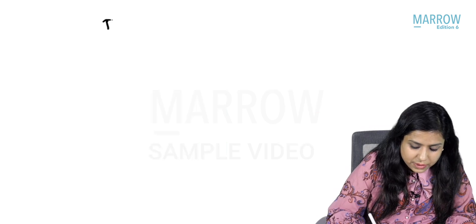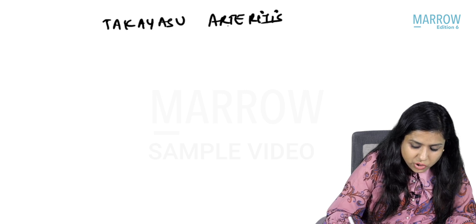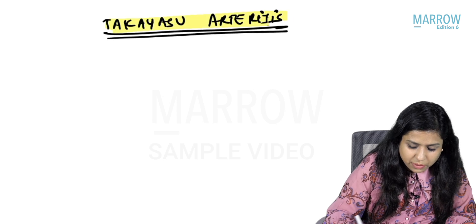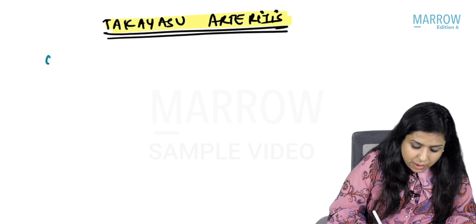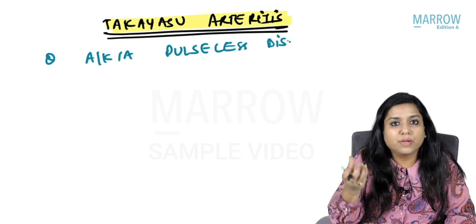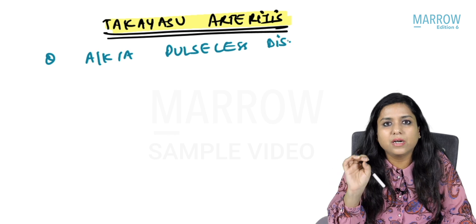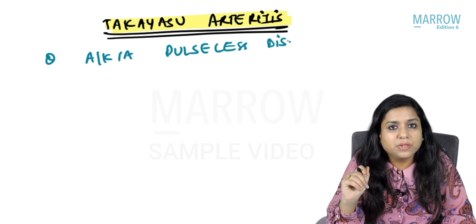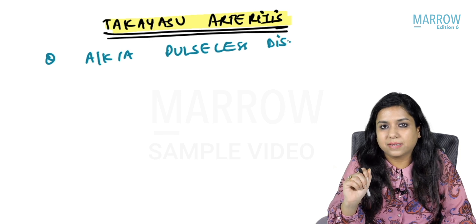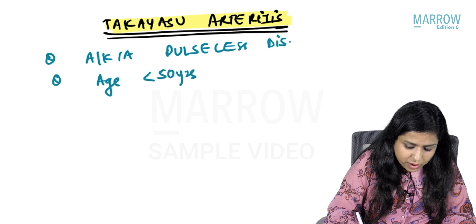The next type of vasculitis is Takayasu arteritis, also a large vessel vasculitis. It is also known as pulseless disease. The patient does have a pulse but it is diminished. The key differentiating point is age less than 50 years.